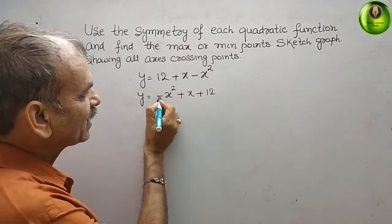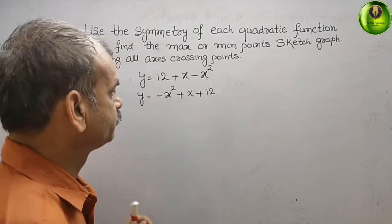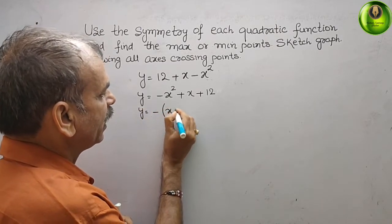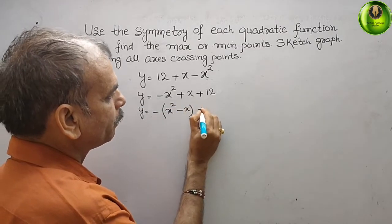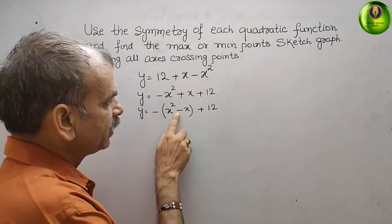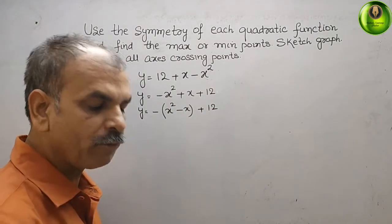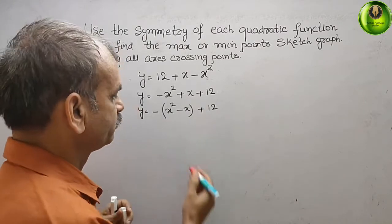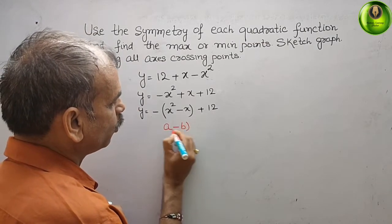Since there is a minus sign, we take minus as a common factor. So y is equal to minus of the quantity x squared minus x plus 12. We will now make it in the form of a minus b whole square, that is a² minus 2ab plus b².